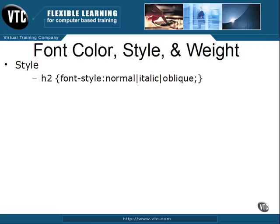To use either one of those values, that version of the inherited font must exist on the end user's operating system. So if we specify italic, then we need to have an italic font on that end user's system. However, if an italic font is not available, the specification will actually force the use of an oblique. However, it will not force an italic if an oblique is not available. So in essence, when in doubt, use italic.